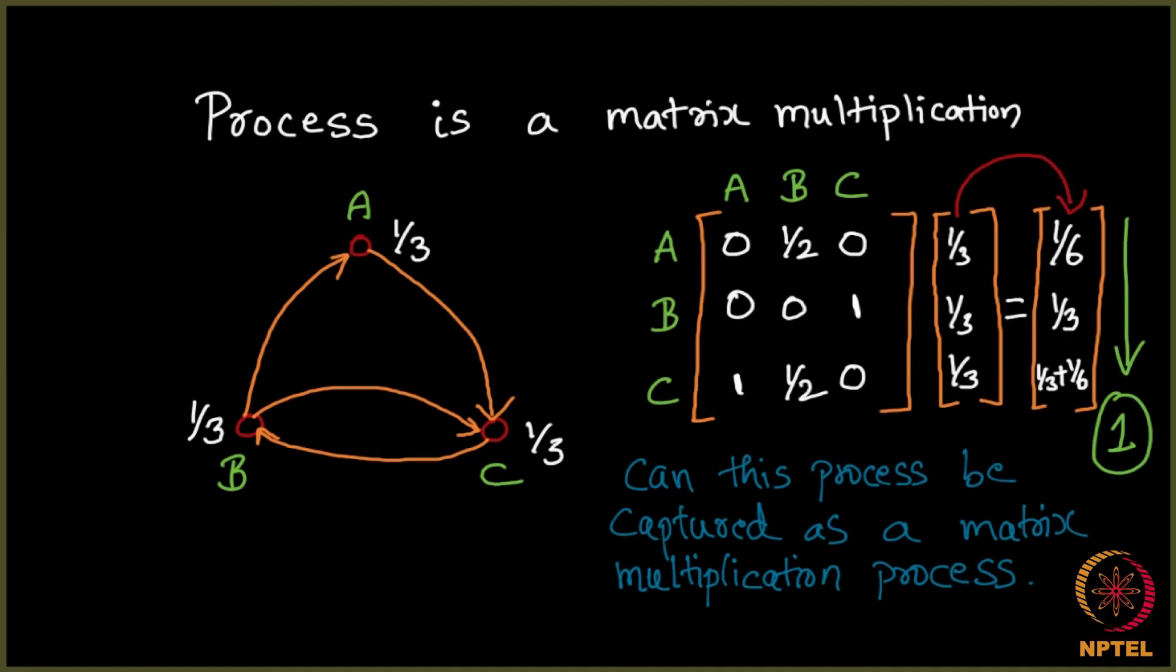Take a minute's pause and see how exactly this matrix is giving rise to the next iteration. Let me go through it slowly so that you all understand. When you multiply 0, half and 0 to 1/3, 1/3 and 1/3, basically this half gets multiplied with this 1/3 giving you 0, 1/2 gets multiplied with 1/3 giving you 1/6 and 0 gets multiplied with 1/3 giving you 0.